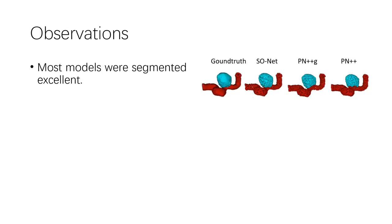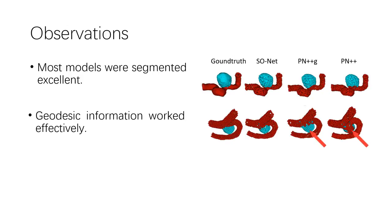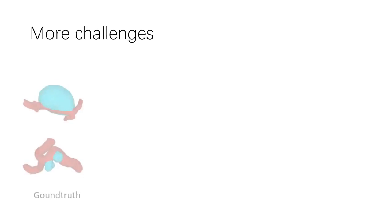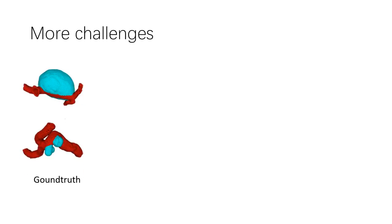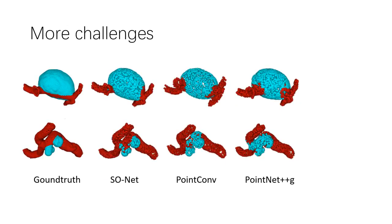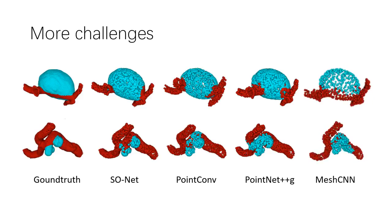Most models were segmented excellently. Spatially nearby vessels and aneurysms were successfully separated, showing the effectiveness of geodesic information used in surface-based methods. However, the accuracy dropped when the aneurysm occupied a small size ratio of the fragment. More challenges arise on common shapes, which are also extremely relevant in clinical practice, and existing models did not achieve high performance. Meanwhile, MeshCNN showed different features — it segmented every aneurysm decently although the overall performance is not the best.